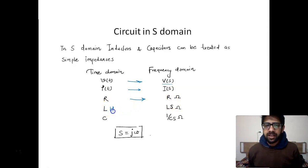L henrys are converted into Ls ohms. So basically if you have an inductor, you can call it Ls ohm resistor and treat it as a resistor and solve. Similarly for a capacitor, you can just convert it into 1 upon Cs ohms. If you have a capacitor, you don't have to worry, just write 1 upon Cs and treat it as you would with resistance.